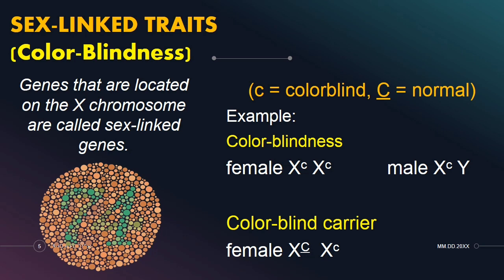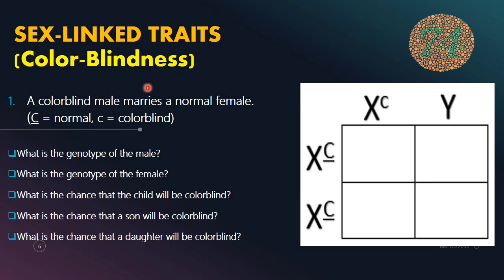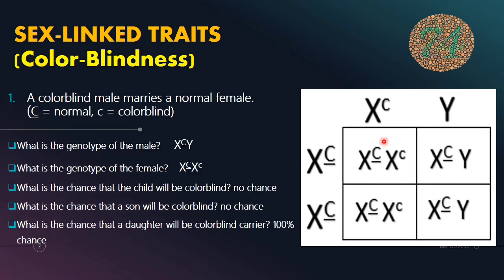So magbigay tayo ng example using a Punnett square. Example number one: a color blind male marries a normal female. Capital C kapag normal, small letter C kapag color blind. Sa Punnett square, on the top portion nakalagay yung male gamits, and on the left side ang female gamits. So i-crisscross natin sila. X capital C at X small letter C ang result para sa una at ikatlong box. X capital C and Y para sa ikalawa at ikaapat na box.